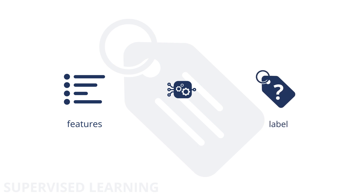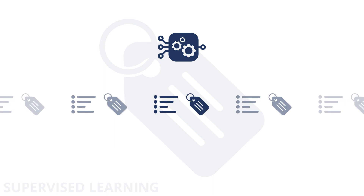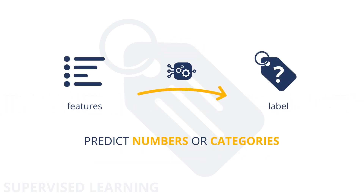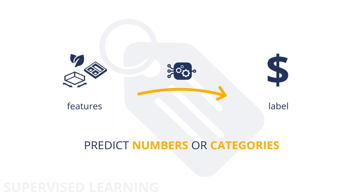The two main categories of machine learning techniques are supervised learning and unsupervised learning. In supervised learning, we want to get a model to predict the label of data based on their features. To learn the mapping between features and labels, the model has to be fitted on given examples of features with their related labels — we say the model is trained on a labeled dataset. Predicted labels can be numbers or categories. For example, a model that predicts the price of a house predicts a number — in this case, we would talk about a regression model.